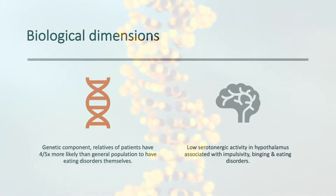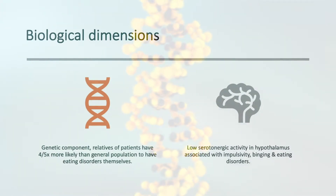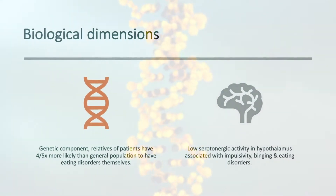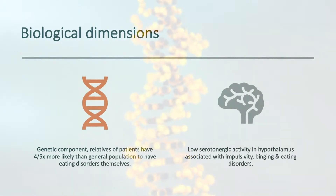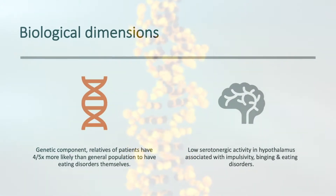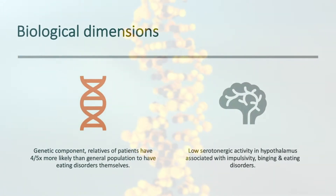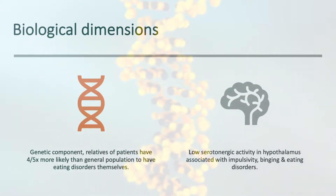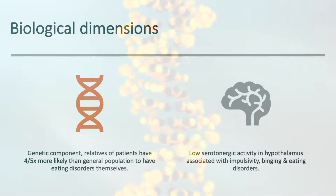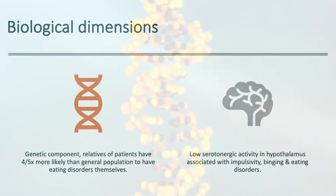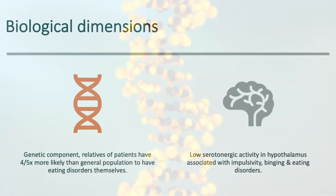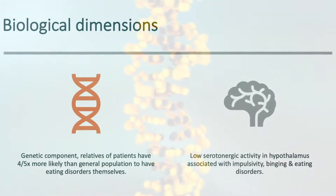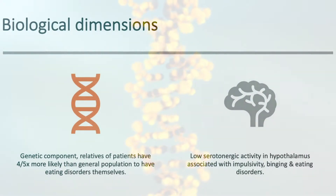Biological dimensions include genetic components whereby relatives of patients are 4–5 times more likely than the general population to have an eating disorder themselves. Low serotonergic activity in the hypothalamus is associated with impulsivity, binge eating, and eating disorders — so it could be irregular activity in the hypothalamus.